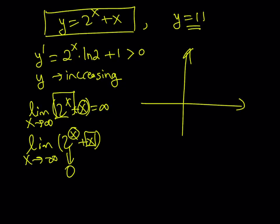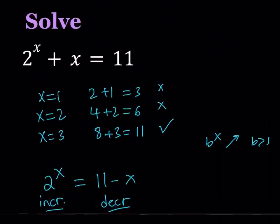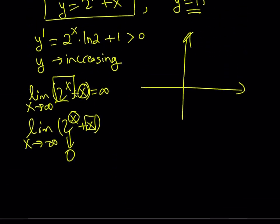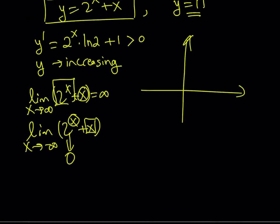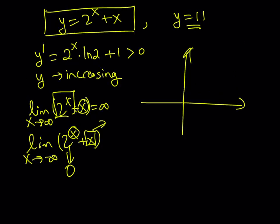Actually, by the way, it should be y equals 2 to the power x plus x. So as x approaches negative infinity, this is going to approach zero and our function is going to look more like x. So we kind of have the following picture.